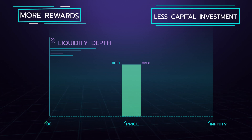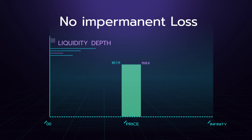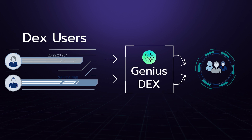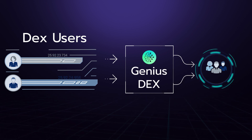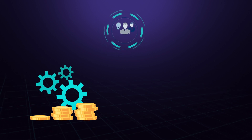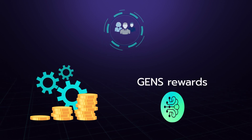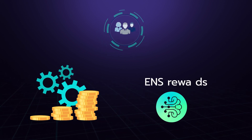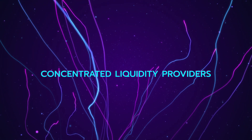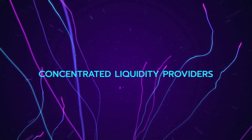This results in more rewards with less capital investment, while virtually eliminating the risk of impermanent loss. Liquidity providers earn a portion of the execution fee paid by the DEX's users. In addition, Genius Yield will give liquidity mining incentives in the form of GEM rewards to liquidity providers that contribute liquidity to certain pools.